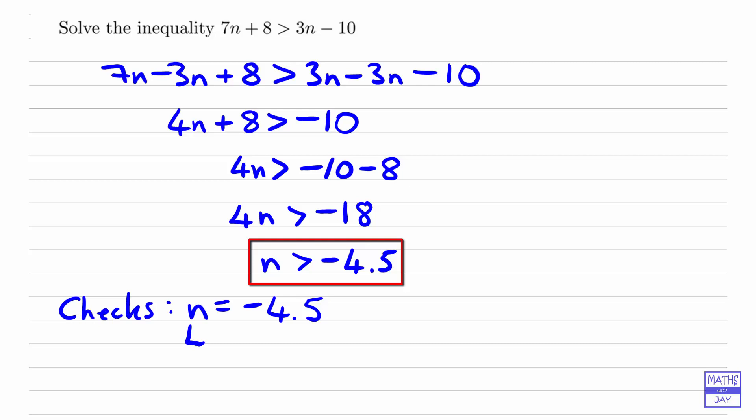So the left-hand side would be equal to 7 times negative 4.5 plus 8. So that gives us minus 31.5 plus 8, so that's going to be minus 23.5.